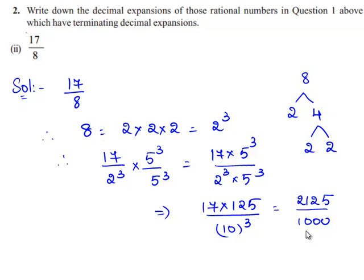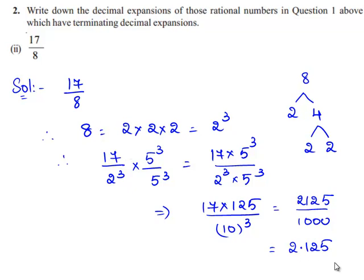Since in the denominator we have three zeros, we shift the decimal point towards the left by three places. Therefore, the decimal expansion of 2,125 upon 10 cubed gives us the decimal expansion for the rational number 17 upon 8, which is equal to 2.125.